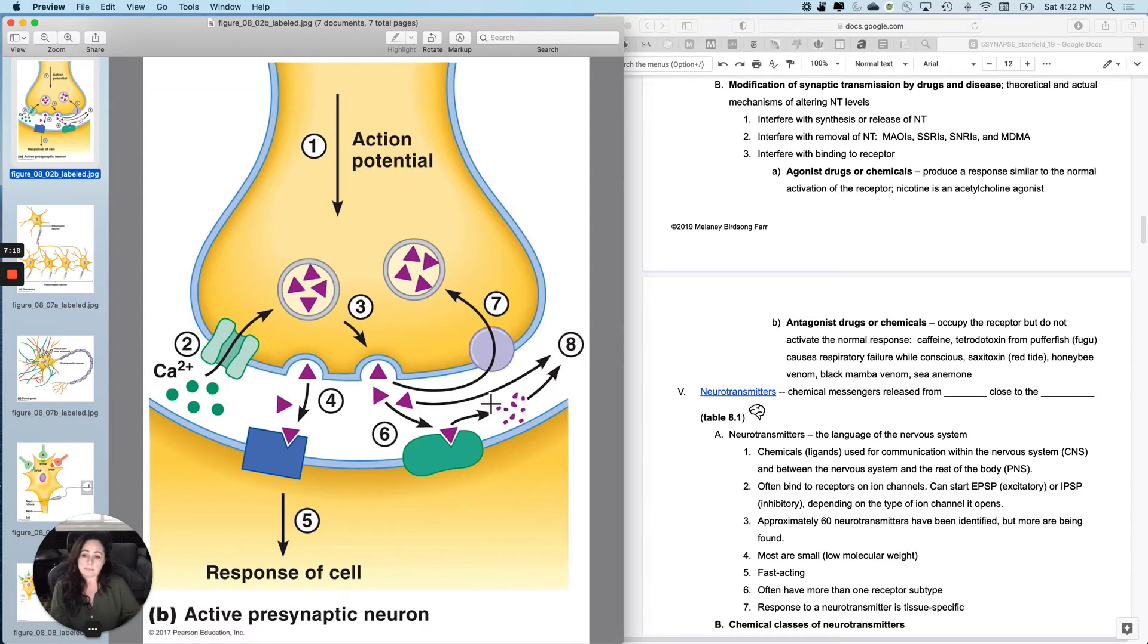And then the other theoretical and also sometimes actual thing that you can do is interfere with the binding to the receptor. When you interfere with the binding to the receptor, what you're doing is taking in a drug or a chemical that either blocks the receptor's binding site so that you can prevent the neurotransmitter activating the receptor. We would call these blockers, and those are categorized as an antagonist drug or chemical. They sit in the receptor and they don't allow the postsynaptic cell to have the normal response.